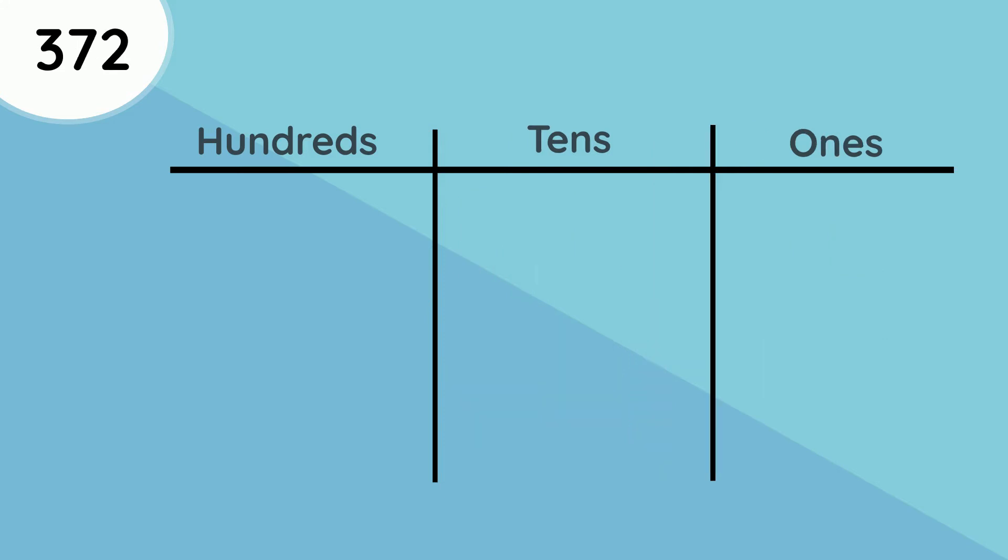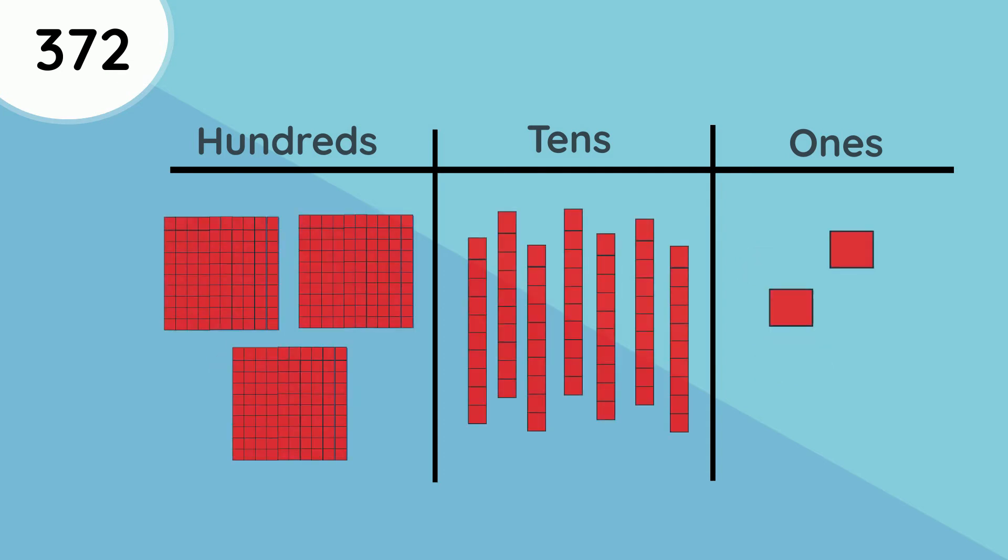In the number 372, the place value of the three is hundreds, the place value of the seven is tens and the place value of the two is ones. Represented with cubes it would look like this. There are three sets of 100, seven sets of ten and two ones.